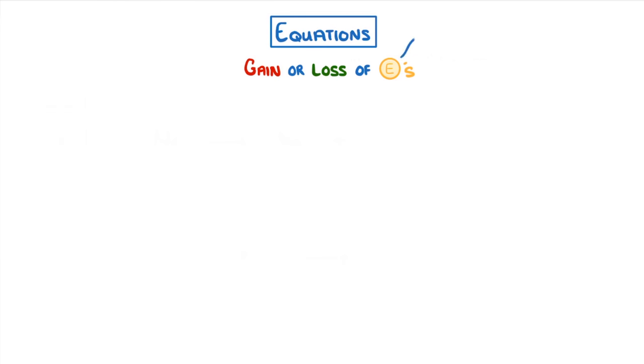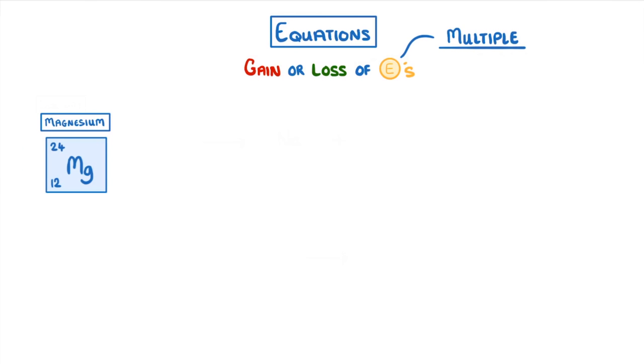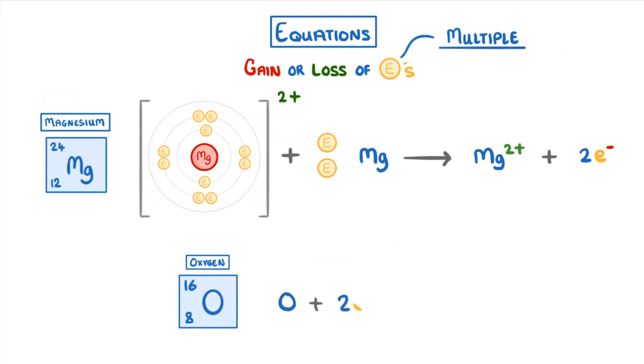Sometimes atoms will lose or gain multiple electrons though. So for atoms like magnesium in group 2, they'll form a 2 plus ion and 2 electrons. So we would write Mg goes to form Mg2+ plus 2 electrons. Or for an example of a group 6 element, we could take oxygen and write that oxygen plus 2 electrons goes to form an oxygen 2 minus ion.